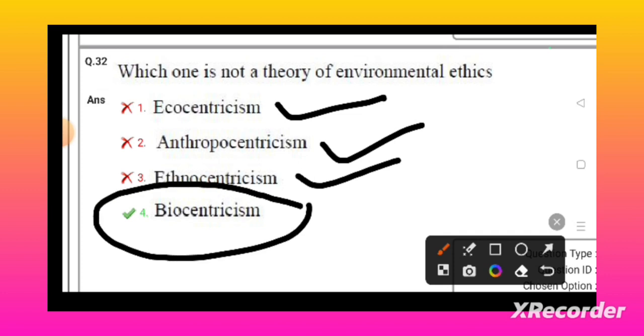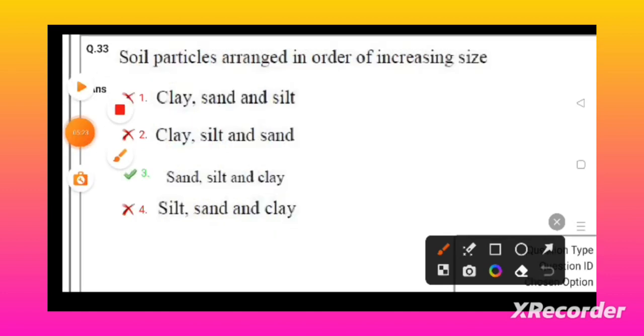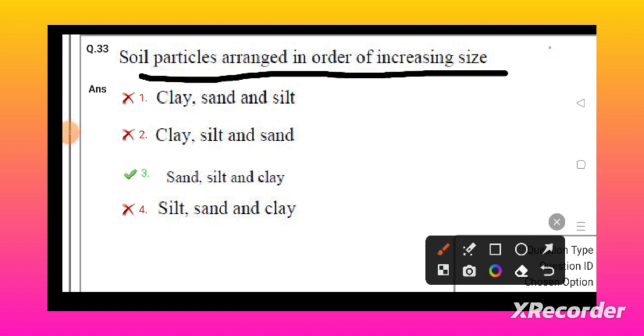Soil particles arranged in ascending order or increasing order: clay will be the smaller size, and after that silt, after that sand will be the correct answer.